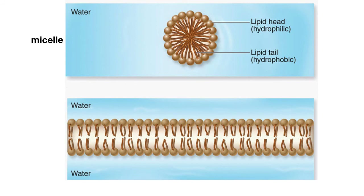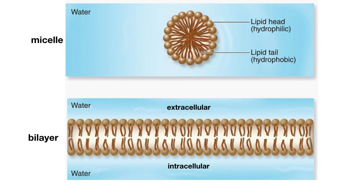In a membrane, phospholipids are arranged into a structure called a bilayer, with their phosphate heads facing the water and their tails pointing towards the interior of the bilayer, so they are only in contact with other tails. This organization prevents the hydrophobic tails from coming into contact with water while maximizing water contact both inside and outside for the hydrophilic heads.